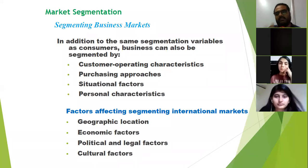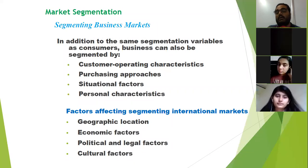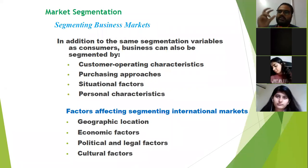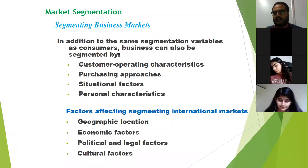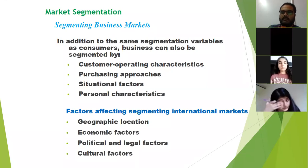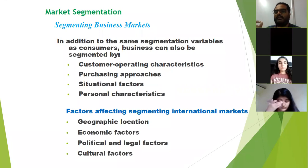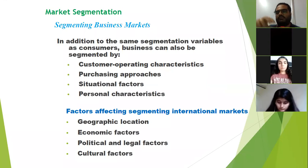In some countries some things are legal; in some countries some things are illegal. In the Netherlands, the use of marijuana is legal — a whole industry has been created around it. In India, it is illegal. These are basically socio-political legal factors that you may have already studied in business environment, wherein the situation of each place or country is different from one another.